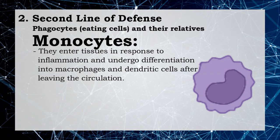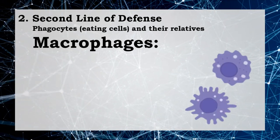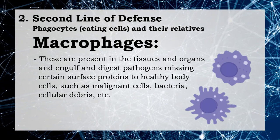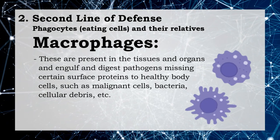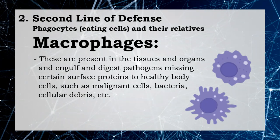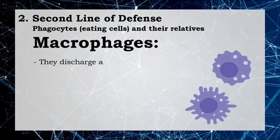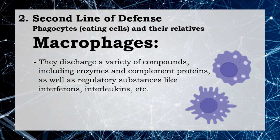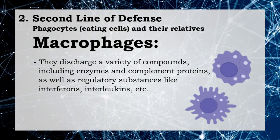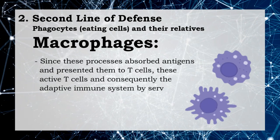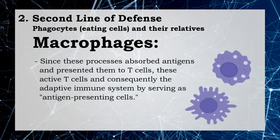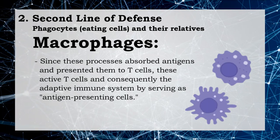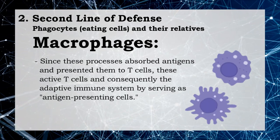Macrophages are present in the tissues and organs and engulf and digest pathogens missing certain surface proteins, as well as malignant cells, bacteria, and cellular debris. They discharge a variety of compounds including enzymes, complement proteins, and regulatory substances like interferons and interleukins. Since they absorb antigens and present them to T cells, they activate T cells and consequently the adaptive immune system by serving as antigen presenting cells.